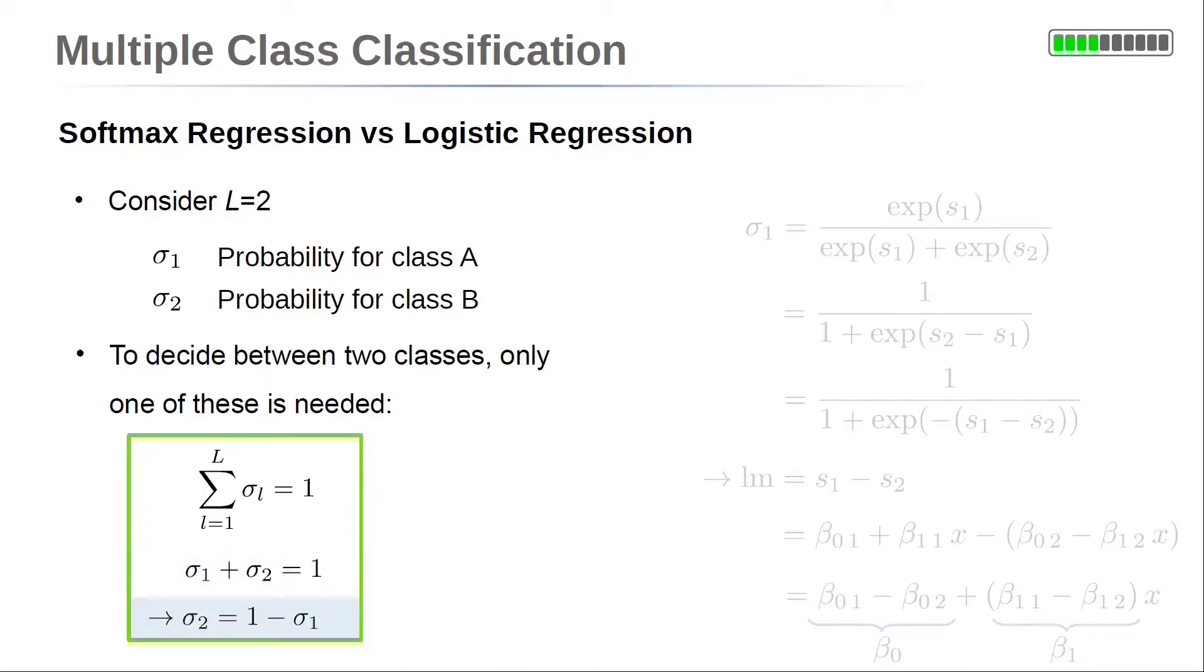Therefore, σ_2 = 1 - σ_1. This means if we know σ_1, the probability of class A, 1 minus this probability gives the probability for class B. So here we need to consider only one of the probabilities. Let us choose σ_1, which is again displayed on the right side.